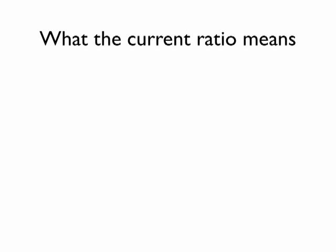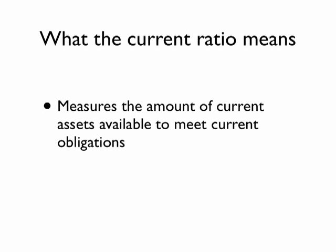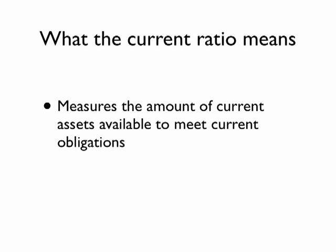The current ratio is the ratio of current assets to current liabilities. It compares resources the company has available to payments the company has to make over the next 12 months. A value greater than one indicates the company can meet its current obligations as they come due.